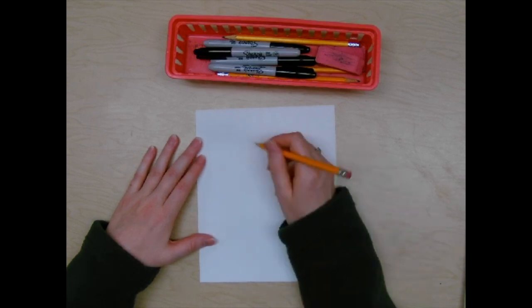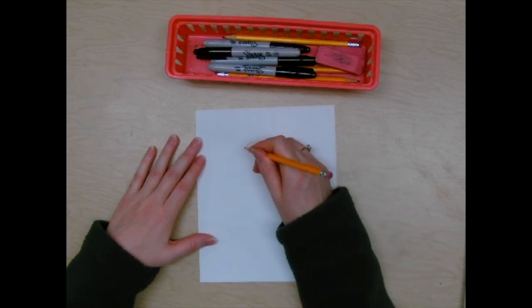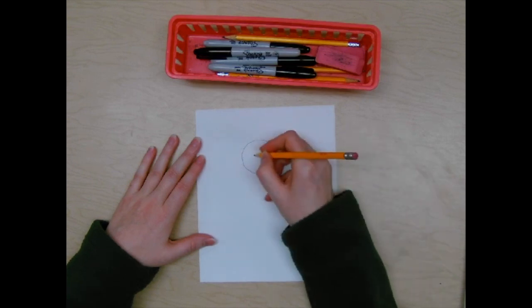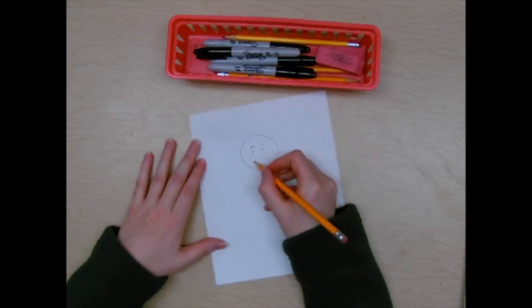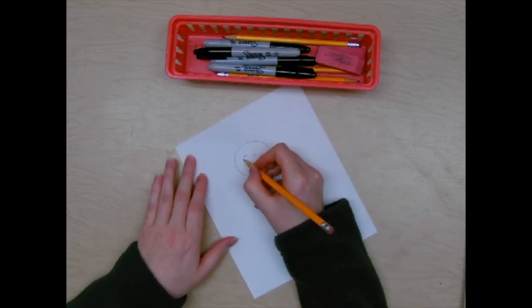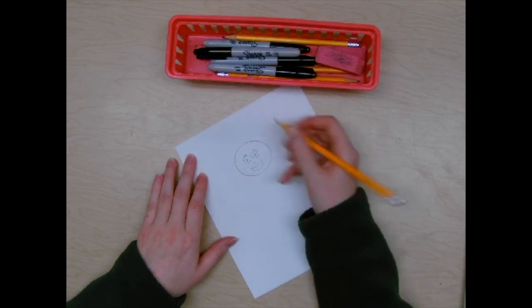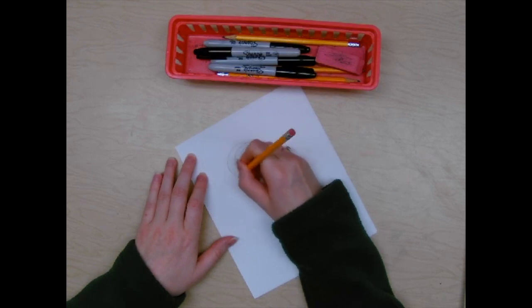Now we're going to start with the head of our stick figure person. So we're going to draw a circle for our heads. Now we need some eyes. Maybe some eyebrows, a nose, and a mouth. If you wear glasses, maybe you want to add your glasses as well. You don't have to draw the glasses if you don't want to. You can also add some hair.